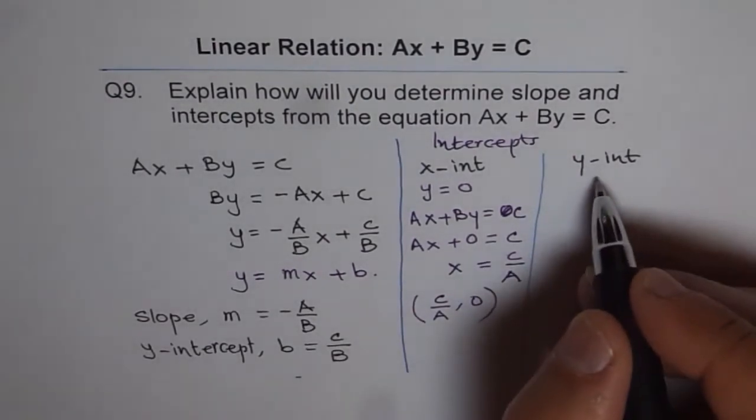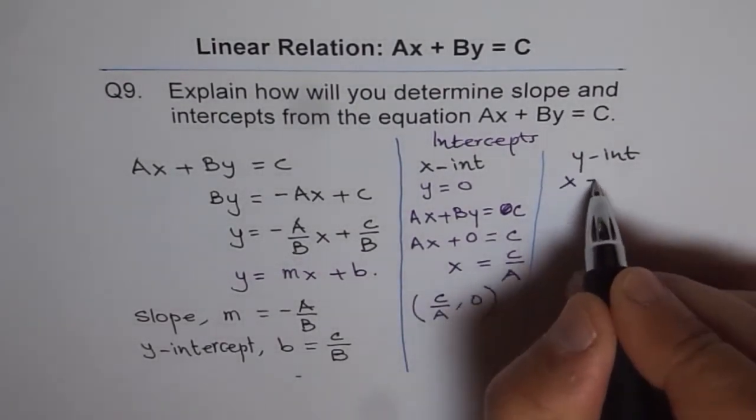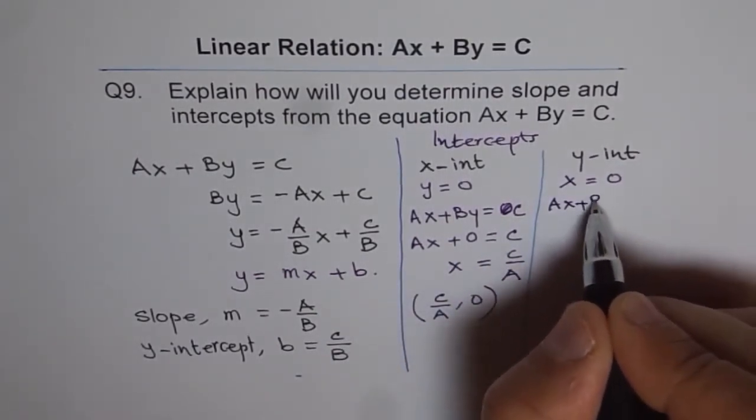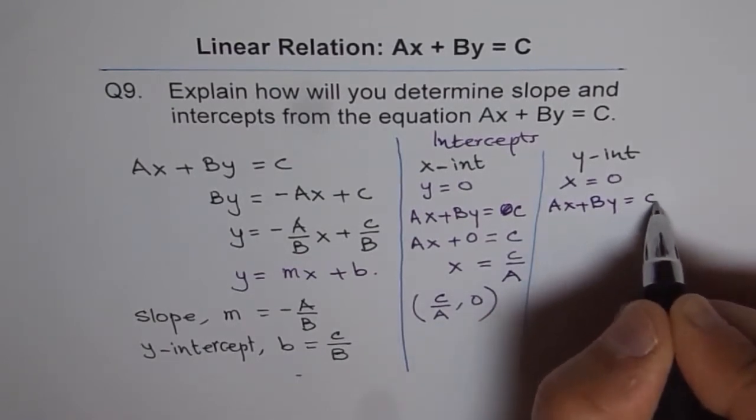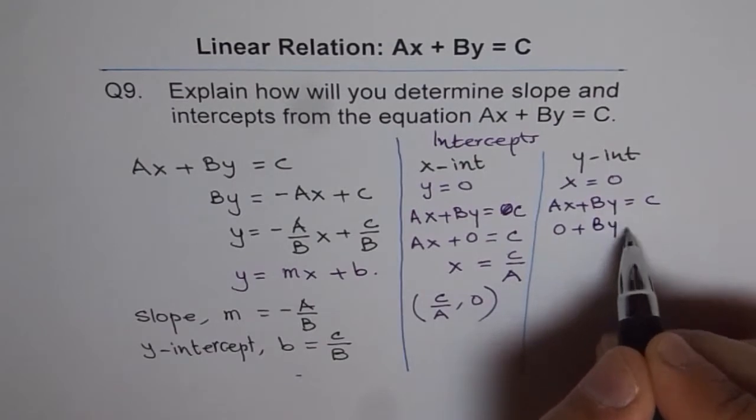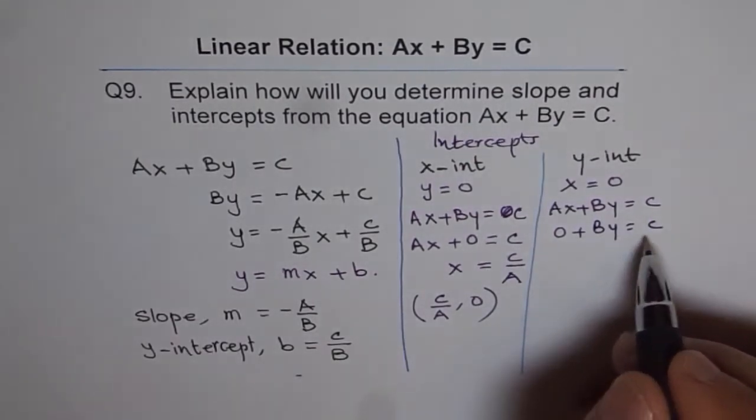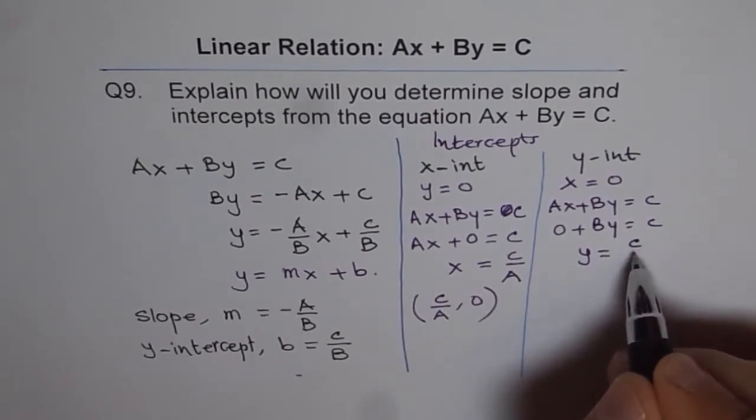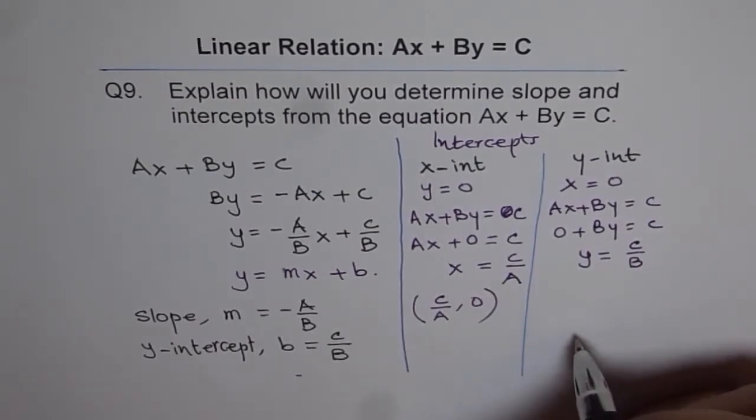To find Y-intercept, we have to put X equals to 0. So in this equation, which is AX plus BY equals to C, if I put X equals to 0, I get 0 plus BY equals to C. And dividing by B, we get Y equals to C over B.